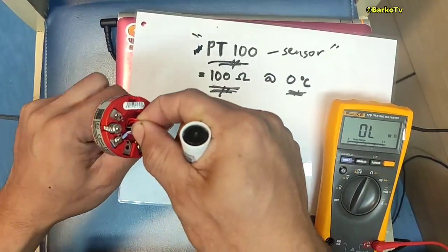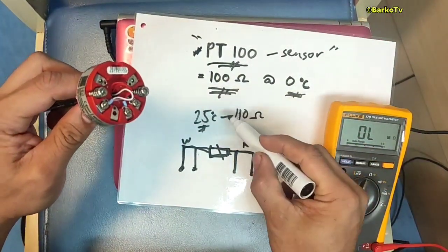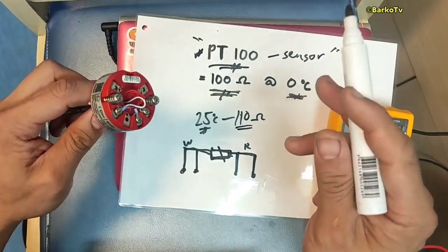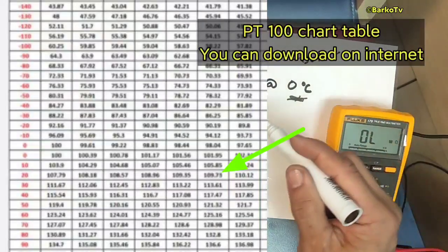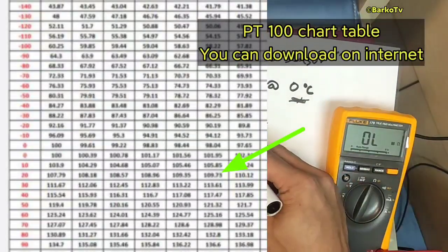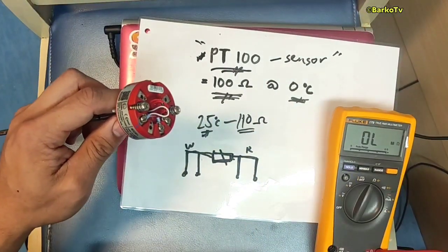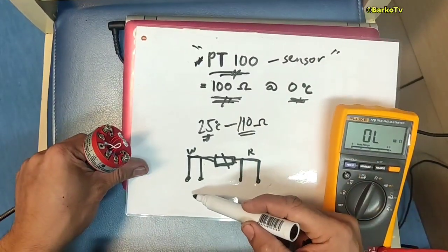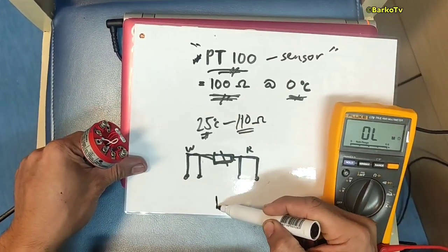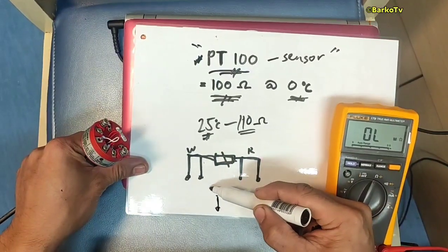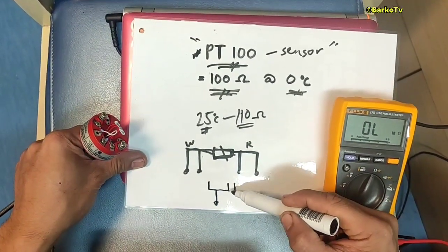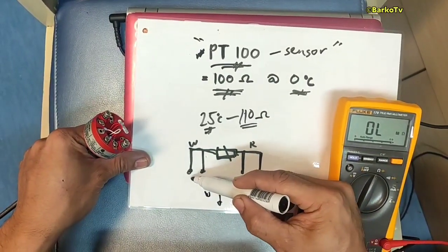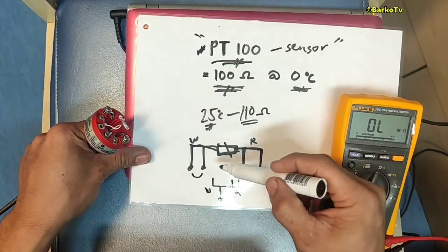The important thing is to check the resistance value. For example, if you get 110 ohms, check the PT100 table to find the equivalent temperature. For instance, 25°C corresponds to around 109.6 ohms. If you have a three-wire sensor, connect the red and white wires as the common.